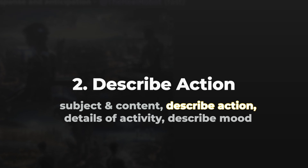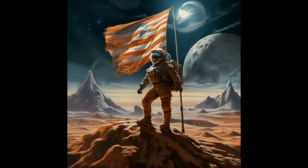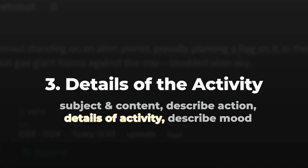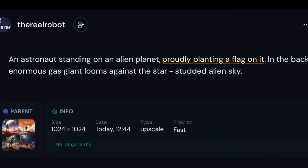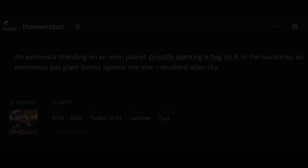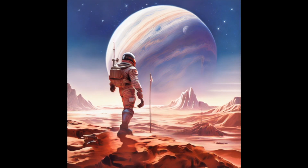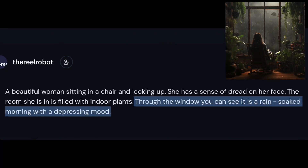Second to that, mention the action — the woman is looking upwards, the astronaut is planting a flag. For the third part of your description, you want to go into an actual descriptor for the activity: there's a sense of dread, or they are planting the flag with pride. And then finally, you can get into the overall atmosphere and mood, like it's a rain-soaked morning with a depressing mood.